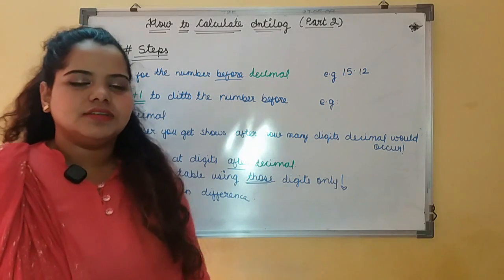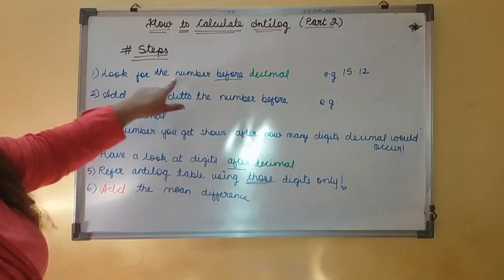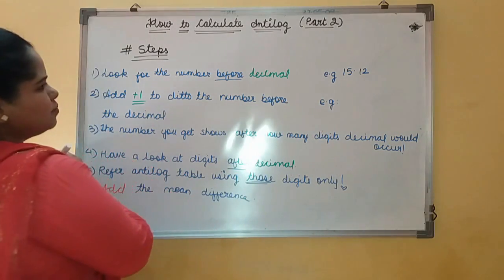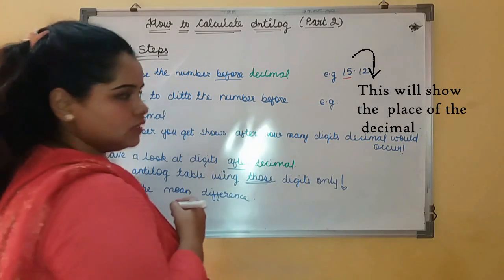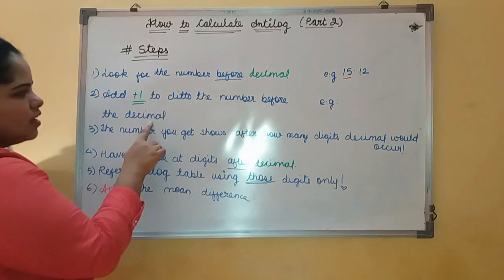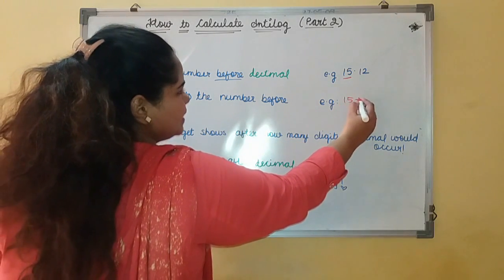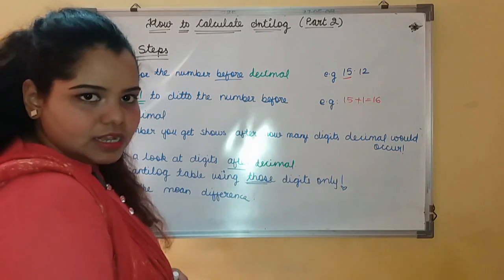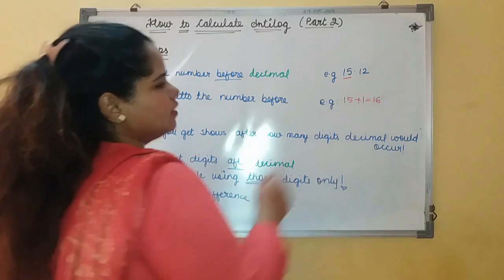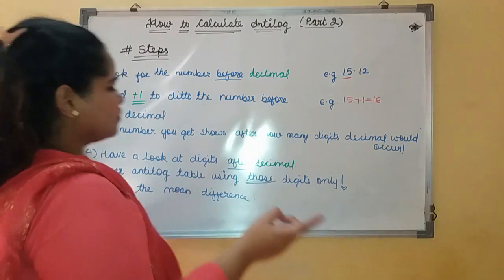So I have written some of the easy steps for you guys to refer — how to find antilog. First, look for the number before the decimal. Whatever the number exists, first have a close look. Here the number before the decimal point is 15, exactly 15. Then add plus 1 to that number before the decimal. The number you get shows after how many digits the decimal would occur. That means after 16 positive digits, since this is a positive number, your decimal would occur.